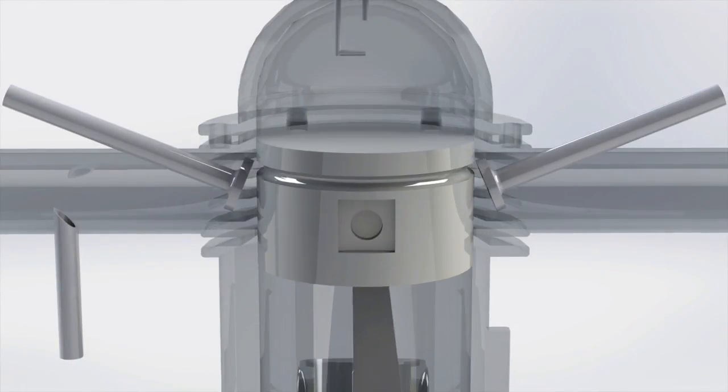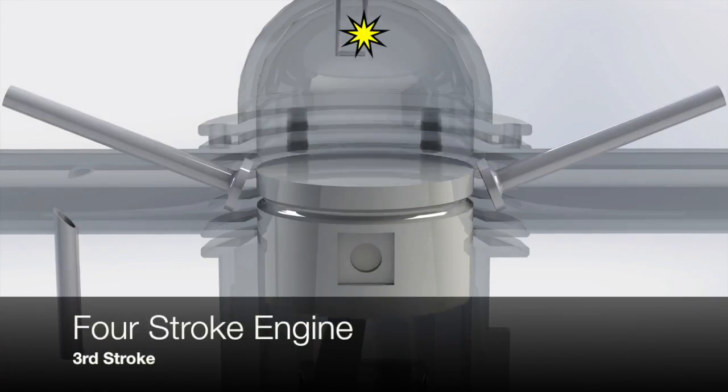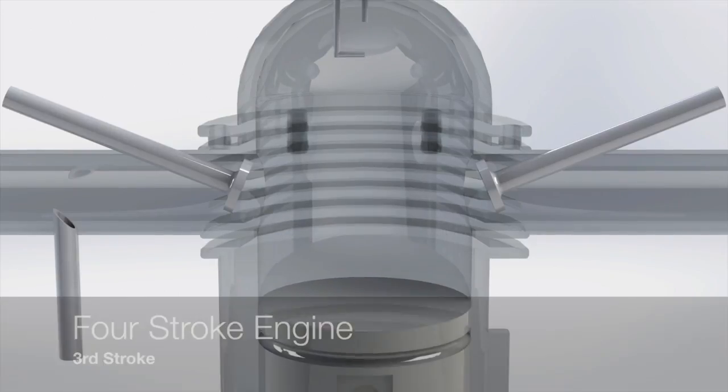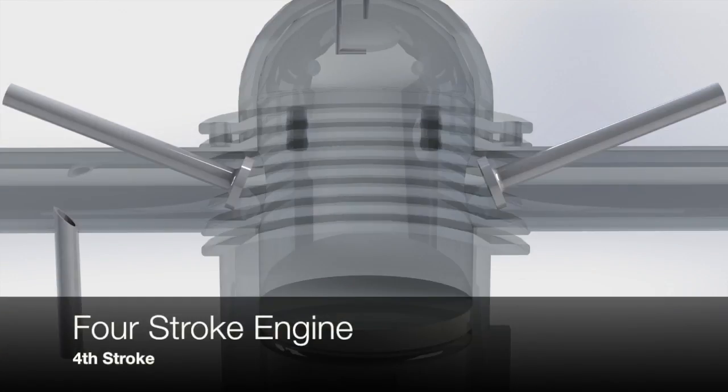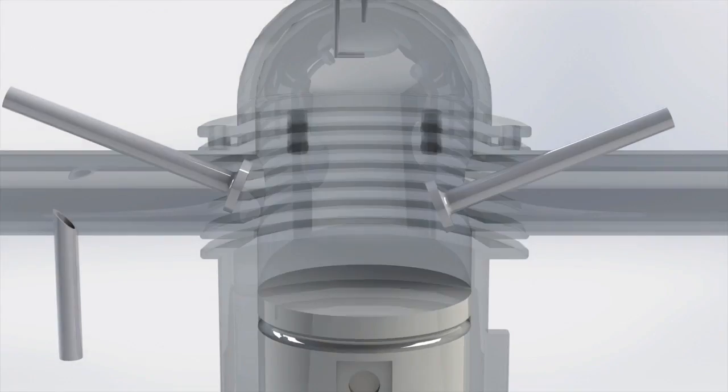When the piston reaches the top of the second stroke, the spark plug ignites the air gas mixture, which expands, sending the piston down on the third stroke. The fourth stroke is when the piston starts to come back up and the exhaust valve opens to release the spent gases.